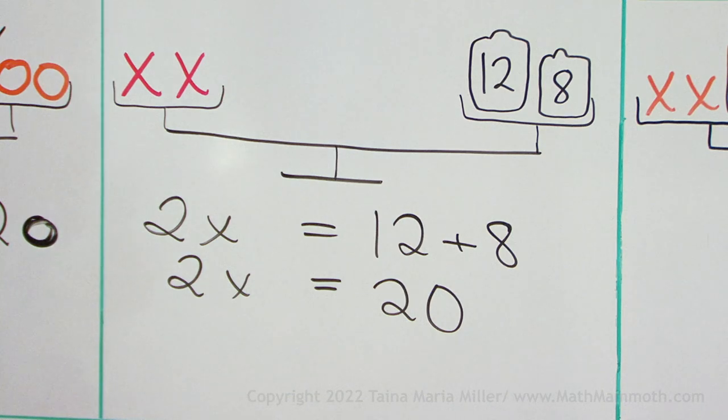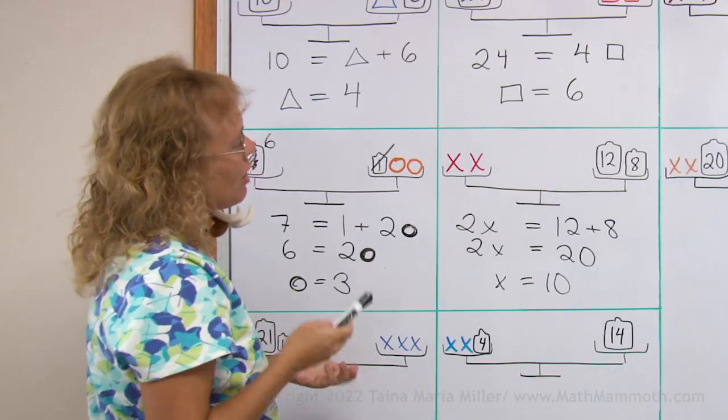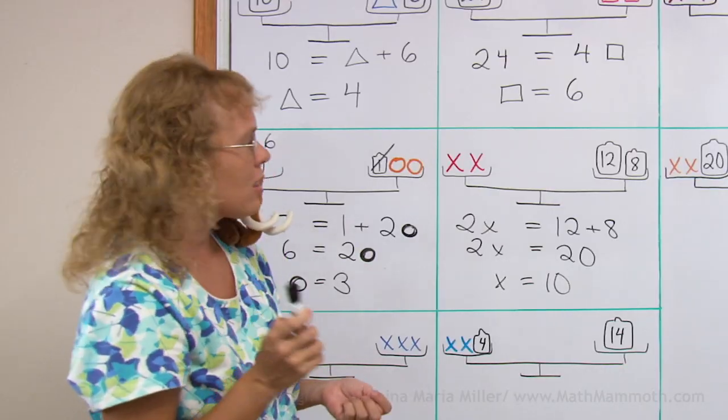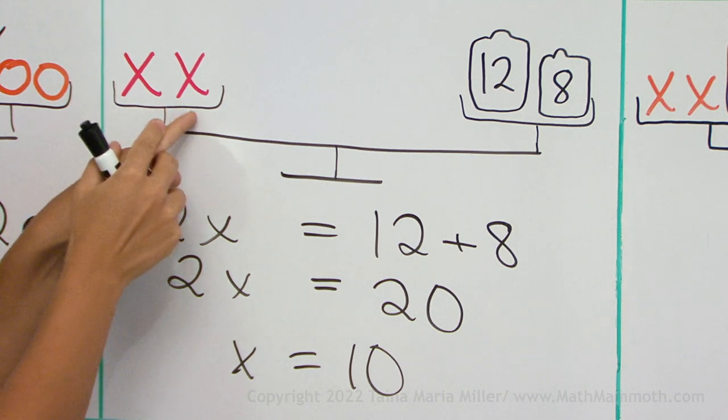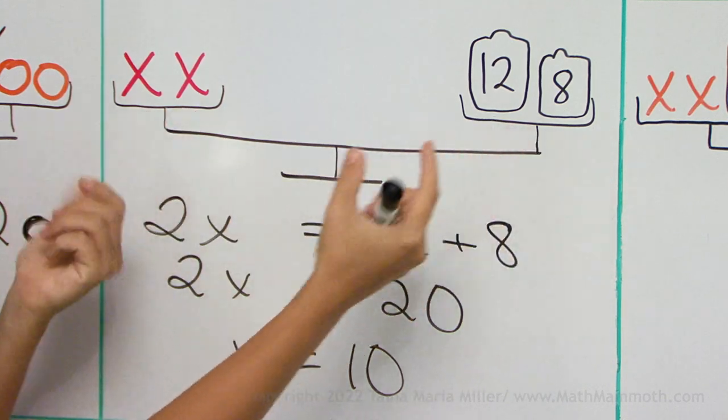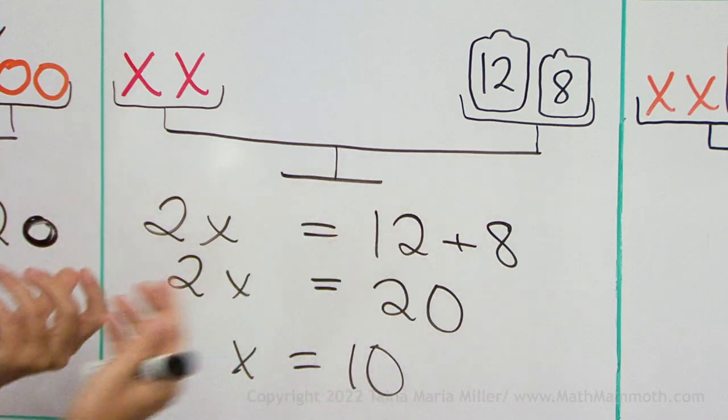So how much does 1x weigh? Oh, super easy, right? x equals 10. And you can also check that your solution is correct by thinking back here that if x is 10, I have 10 and 10, 12 and 8. Is it balanced? 20, 20. Yes, it is.